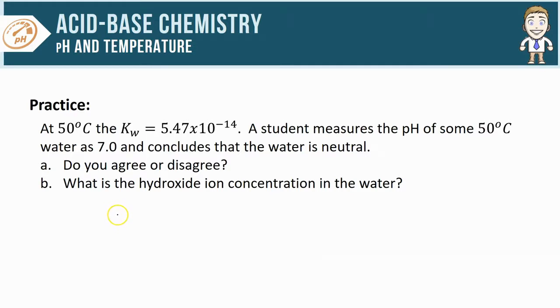Let's take a look at how we would answer this question. First, the temperature is raised, so the Kw value is increased to 5.47 × 10^-14. The pH comes out as 7, so the student concludes that the water is neutral.